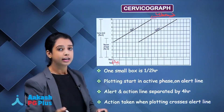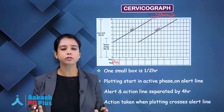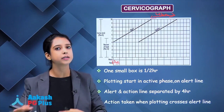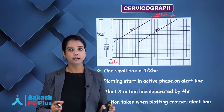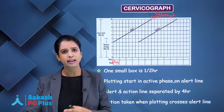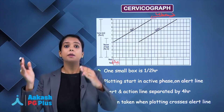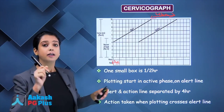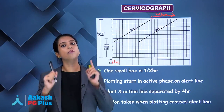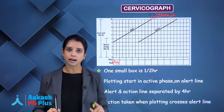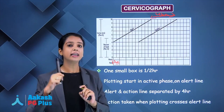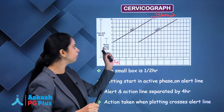When you start plotting on a partograph, you start at 4 centimetres. You might think the active phase is from 6 centimetres — that change was made by WHO in 2016 — but the partogram has still not been updated. So plotting still starts from 4 centimetres on the alert line. The first plot you make has to be on the alert line.